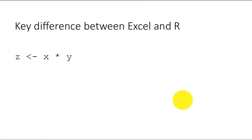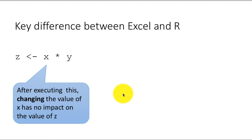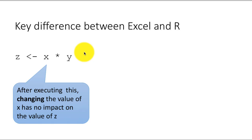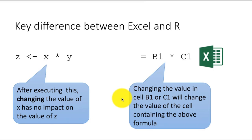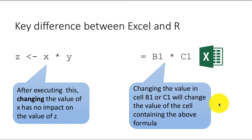So to recap: suppose you have that statement in R and you executed it. After executing the statement, changing the value of x or y has no impact on the value of z — unless you re-execute that statement, then of course z will change. Otherwise it's not going to change. Whereas in Excel, if you had the formula equals B1 times C1 in a cell, and then you go and change B1 or C1, then without you having to do anything more, the value of that cell will automatically recalculate. That's not how R works.